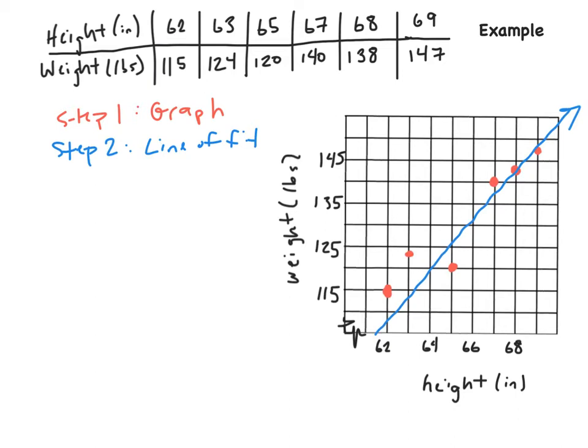So, now we have step three. We need to find two points on this line that looks like we could, that could possibly fall on the line. Remember, this is just an estimation. So it looks like it comes within the crosshairs right here at 64, 120. So I'm going to use this point.